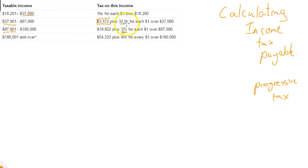So $0.19, $0.325, $0.37. And once you start earning over $180,000 a year, it's $0.45 for every dollar. So it's called a progressive rate because the more money you earn, the greater the percentage of tax you pay.